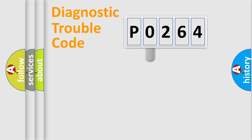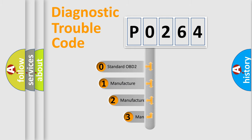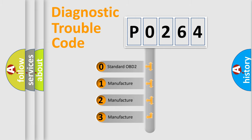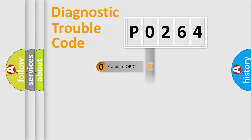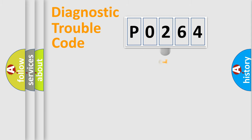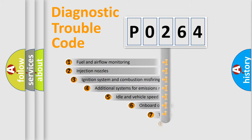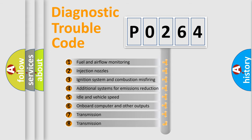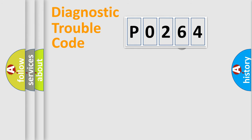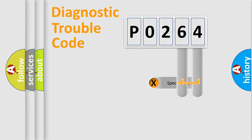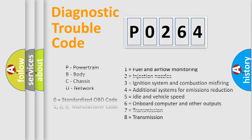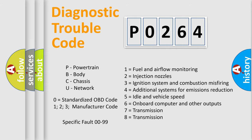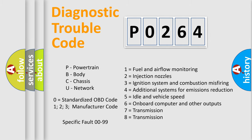This distribution is defined in the first character of the code. If the second character is expressed as zero, it is a standardized error. In the case of numbers 1, 2, or 3, it is a more manufacturer-specific expression. The third character specifies a subset of errors. The distribution shown is valid only for the standardized DTC code, and only the last two characters define the specific fault of the group. This division is valid only if the second character is expressed by the number zero.